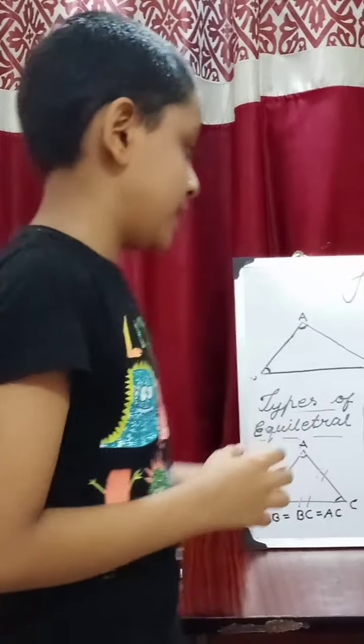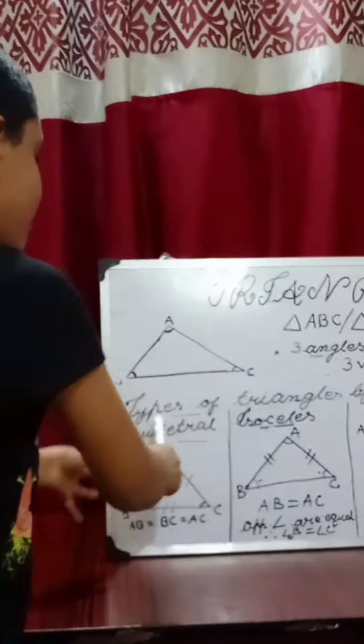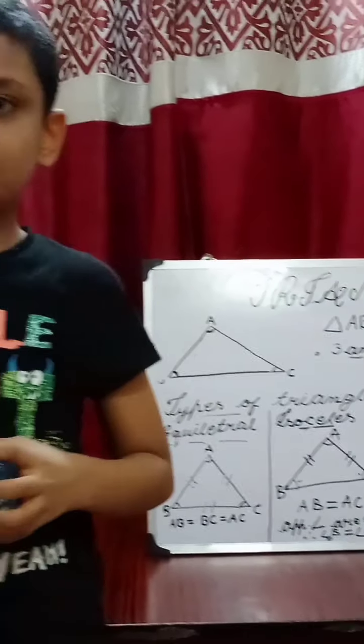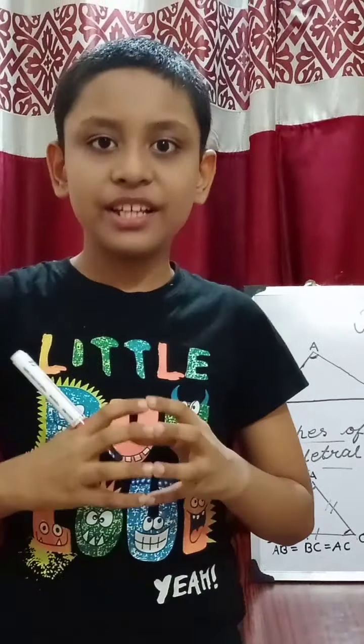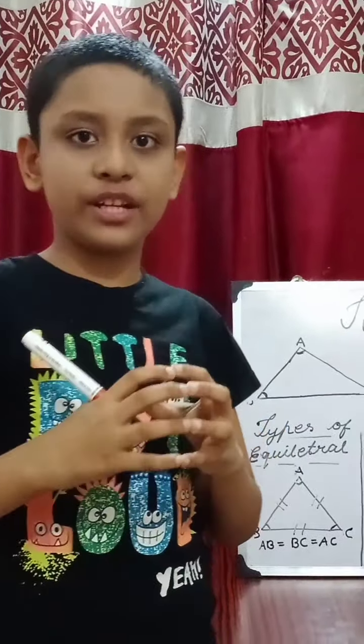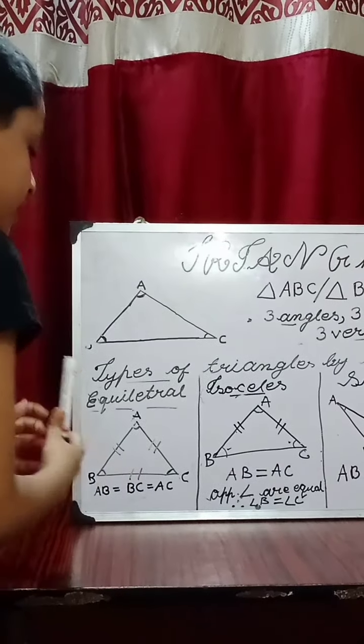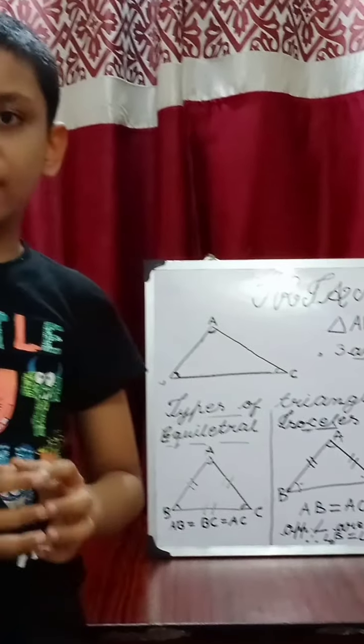Triangles can be classified into types of triangles by angles and types of triangles by sides. Let's begin with the types of triangles by sides. Our first triangle is an equilateral triangle. An equilateral triangle is such a triangle in which all the sides are equal.